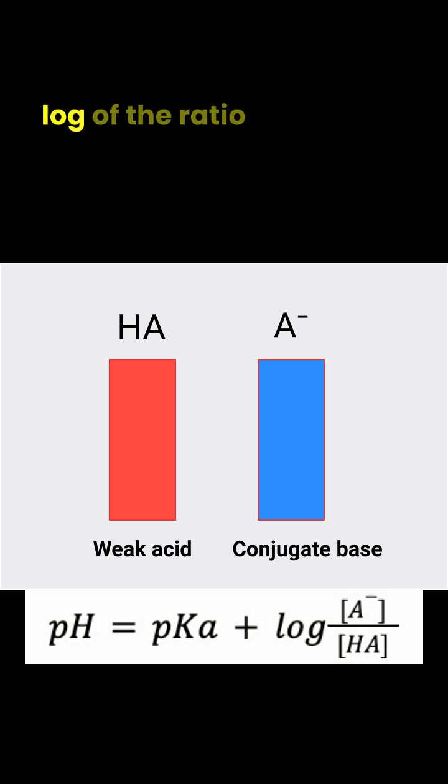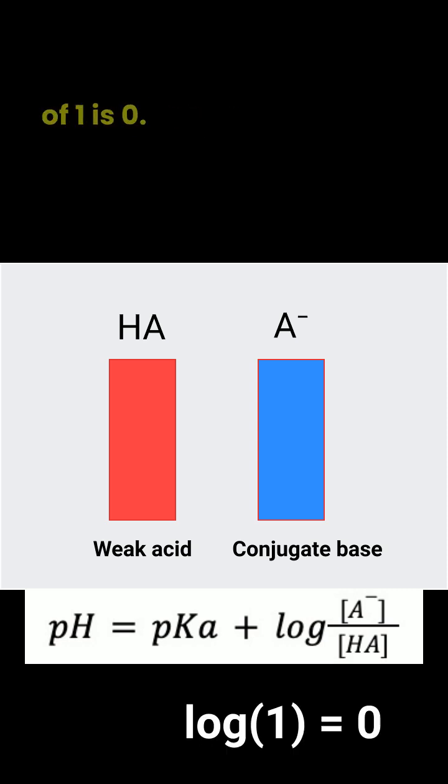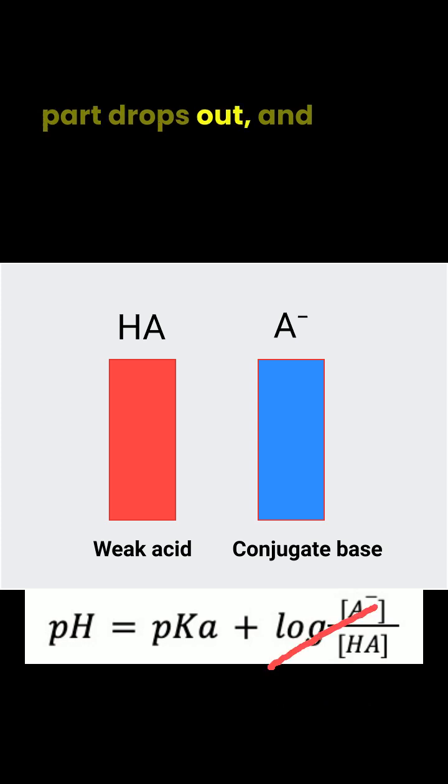The second part is log of the ratio of conjugate base to concentration of weak acid. If the concentrations of these components are equal, then you're taking the log of 1, and log of 1 is 0. So that whole second part drops out, and you're left with pH equals pKa.